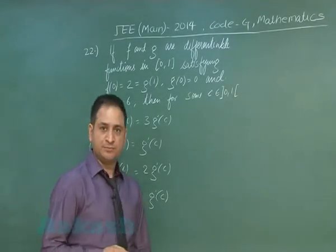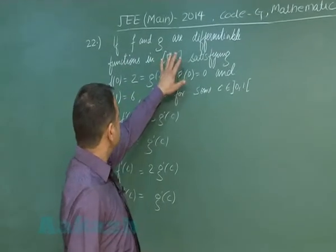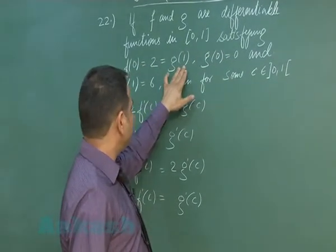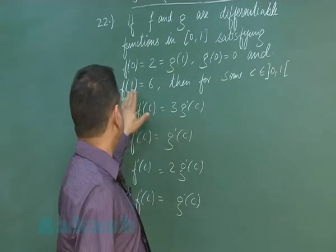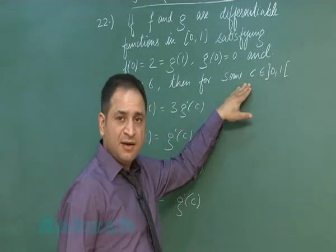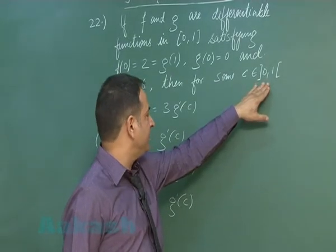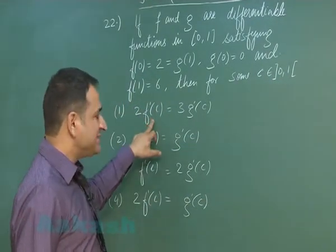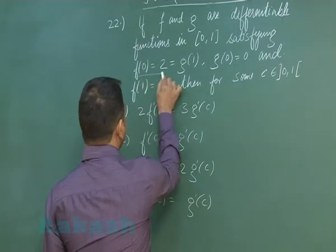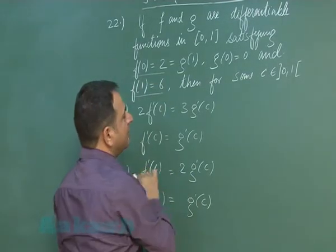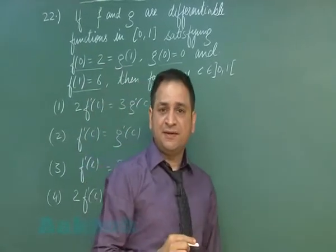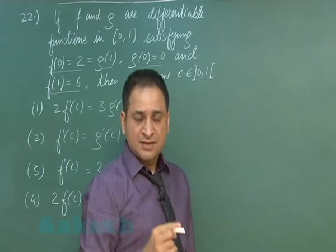Moving to problem number 22. f and g are differentiable functions on [0,1]. f(0) is equal to 2, g(1) is equal to 2, and g(0) and f(1) are also given. The question asks: for some c lying in the open interval (0,1), what is the relation between f'(c) and g'(c)? The values of f and g at both endpoints 0 and 1 are given.